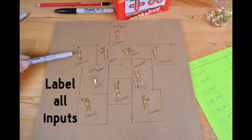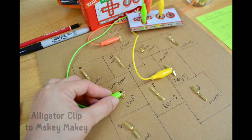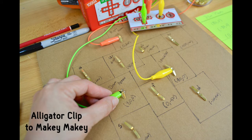Make sure you label all inputs on the back of the board so it's not confusing when you're ready to hook it up. Follow the chart in our guide for all key press inputs and all plot points. And you're going to alligator clip each input to the Makey Makey.